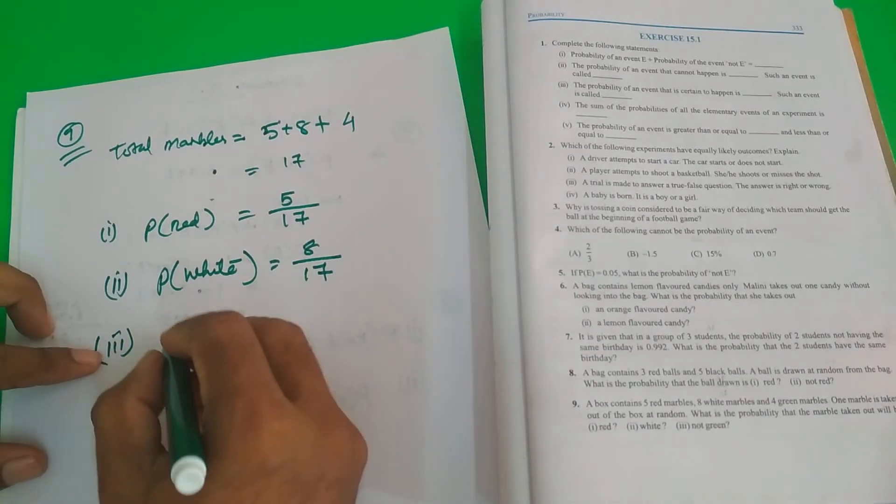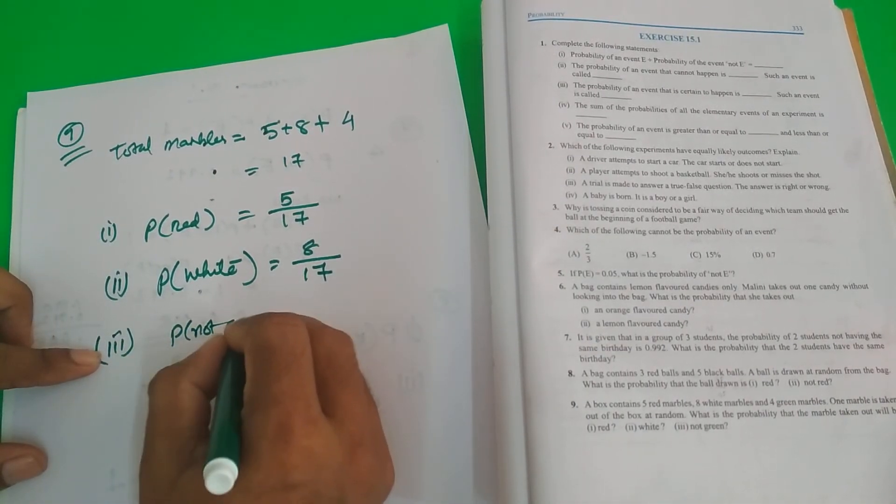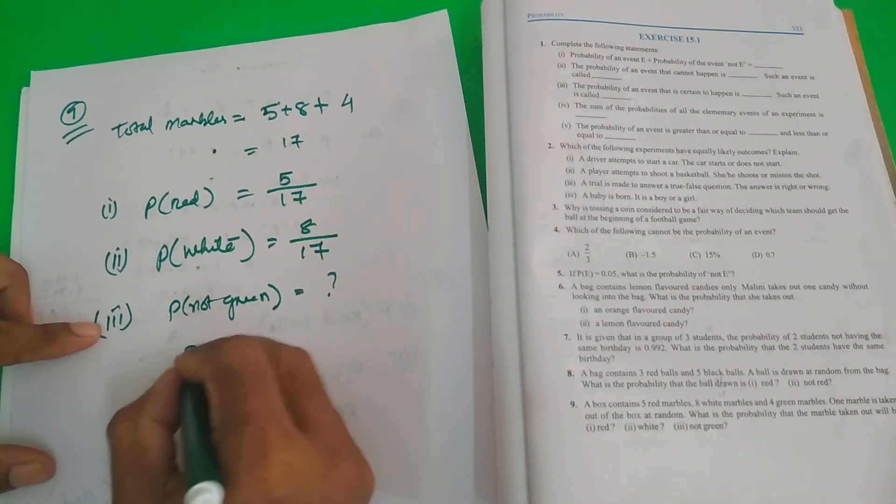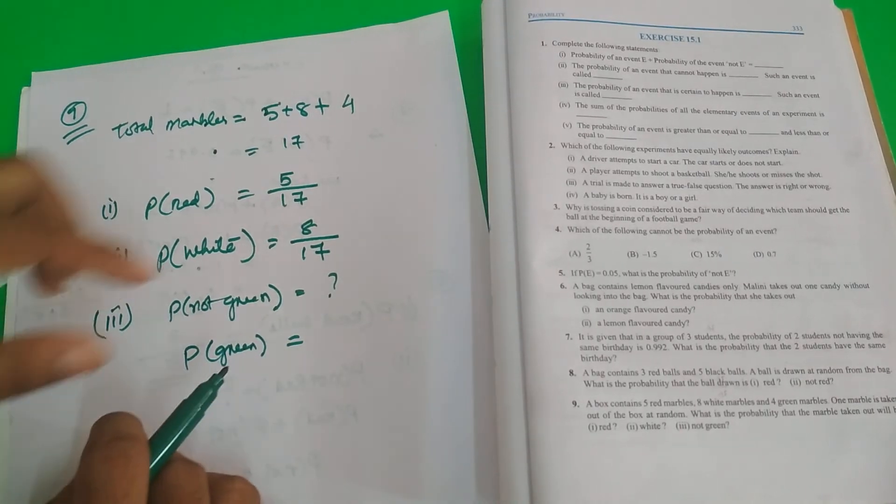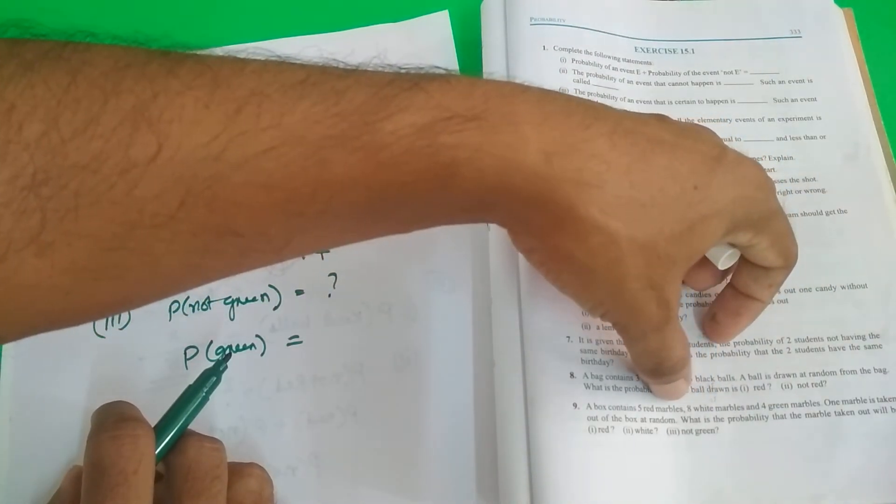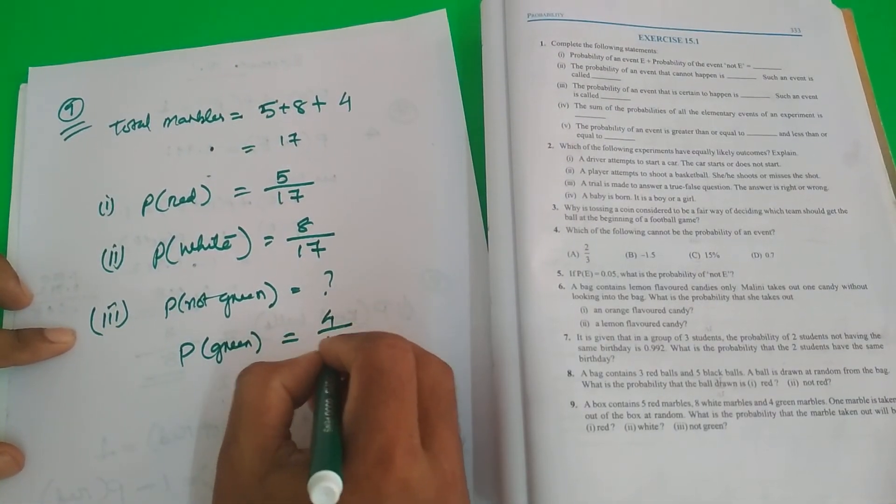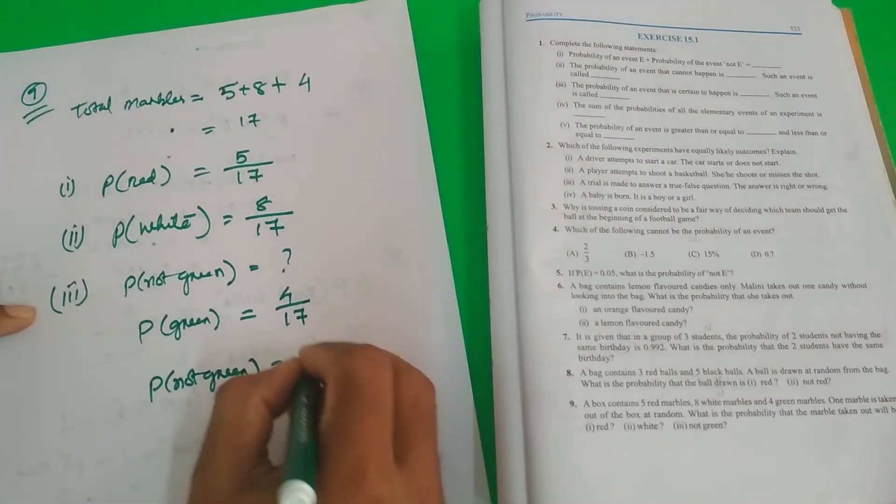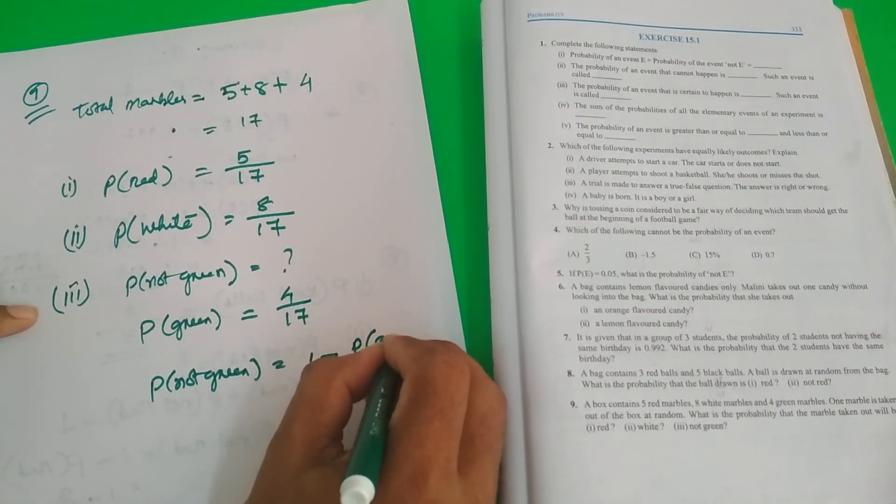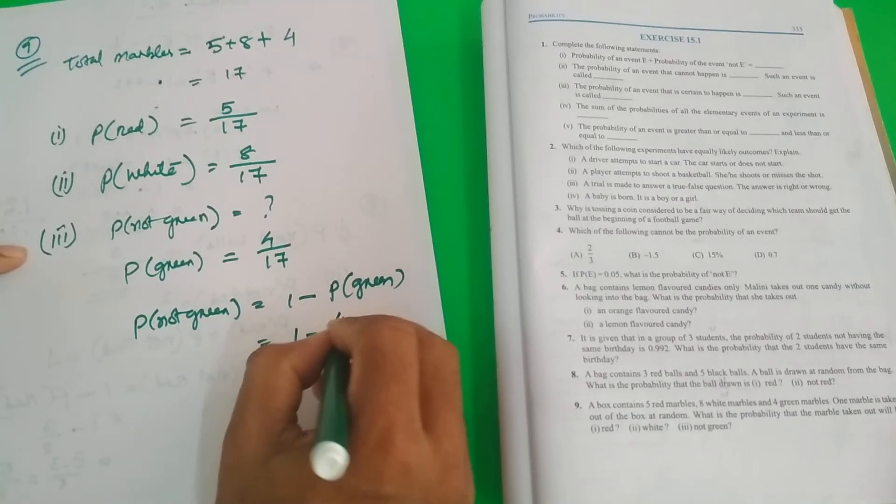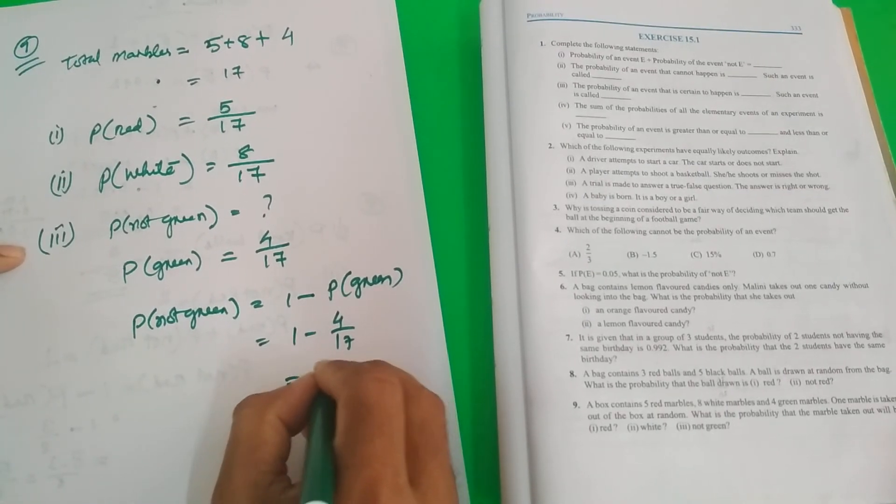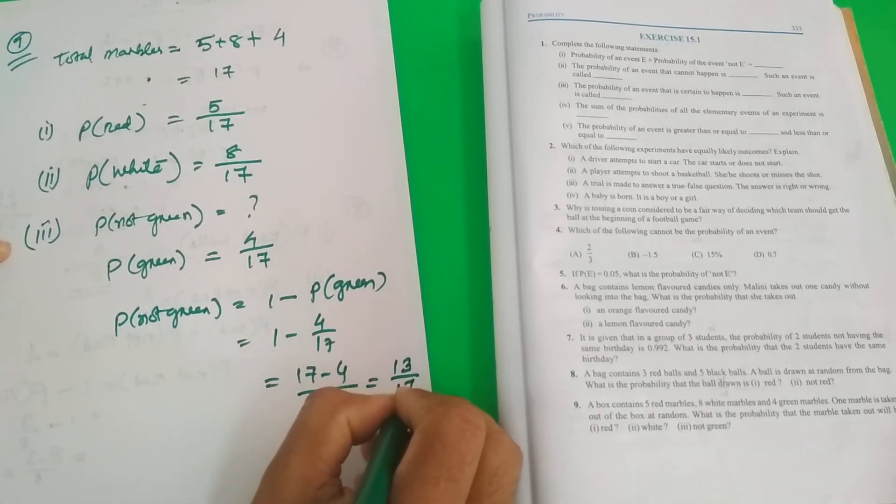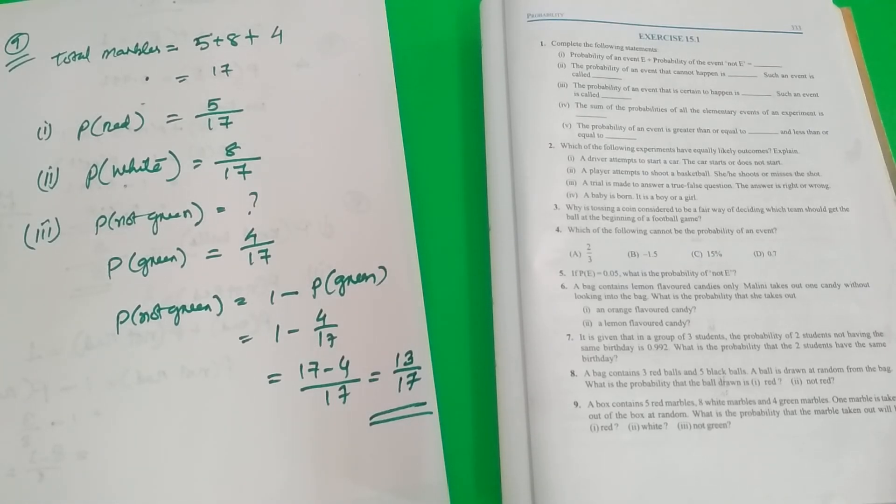3. Not green. Probability of green. We need to first find probability of green. What is the probability of green? We have 4. 4 by 17. Probability of not green equal to 1 minus probability of green. 1 minus 4 by 17. I think it is 17 minus 4 by 17. Equal to 13 by 17. That's the answer we have.